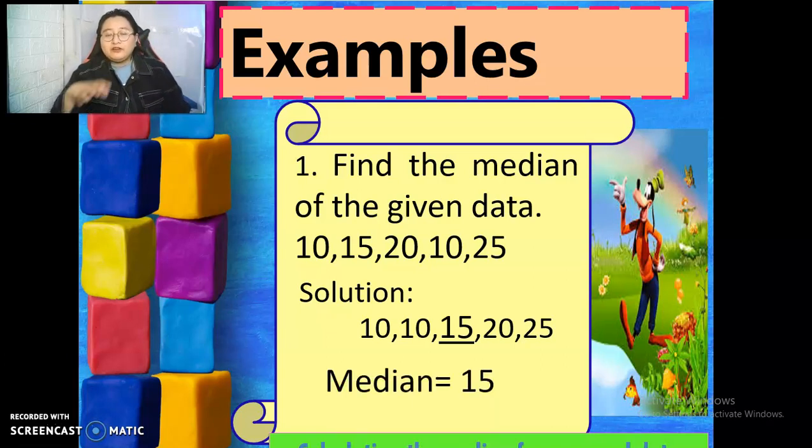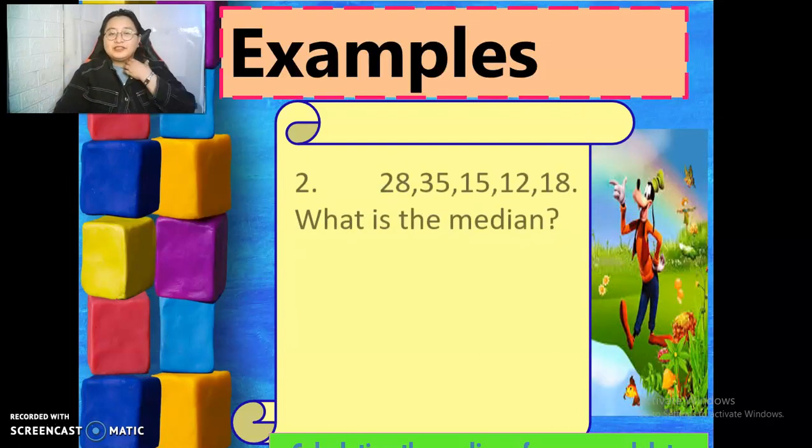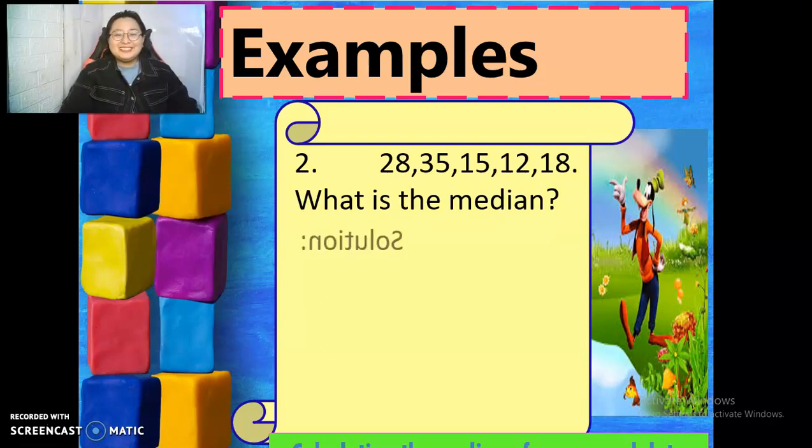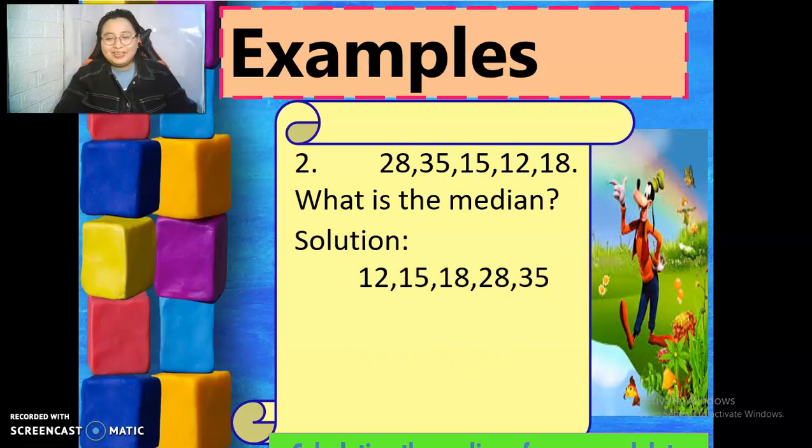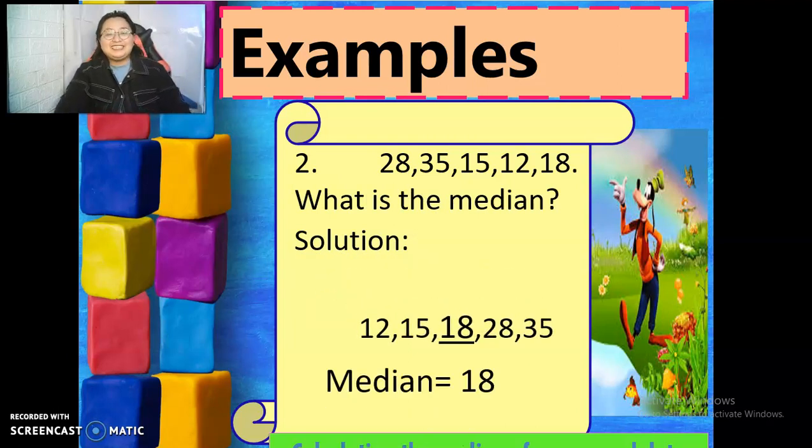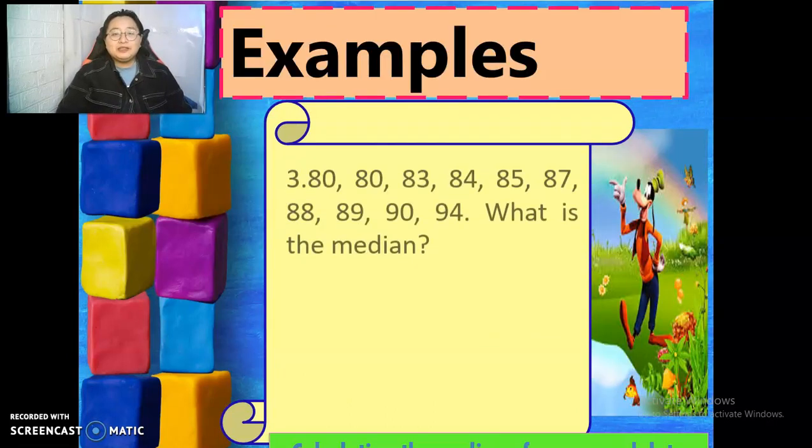How about the other one? 28, 35, 15, 12, and 18. What is the median? Arrange it. And then you got the median. Because it's still odd numbers of data points, the answer is 18. The median is 18.